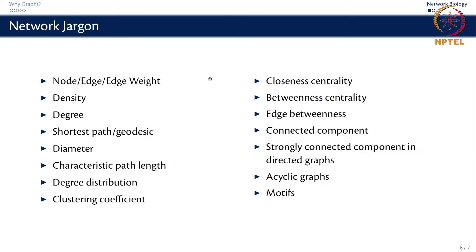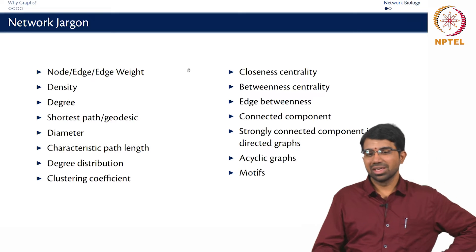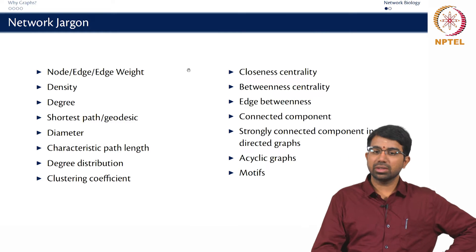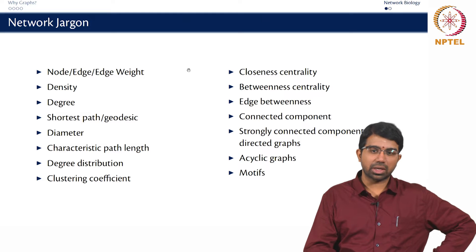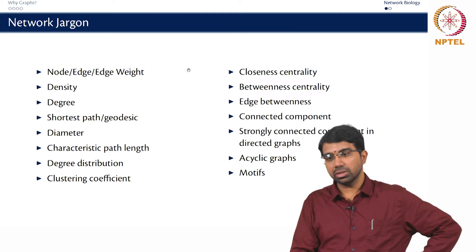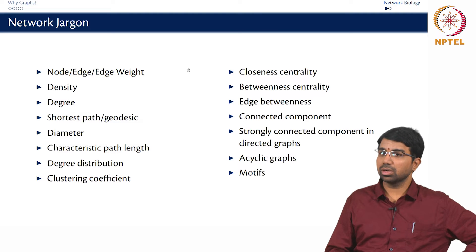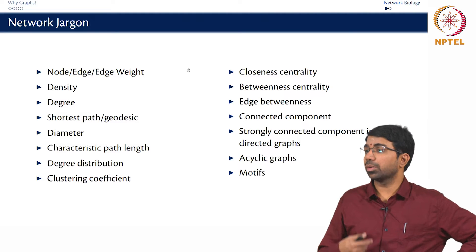Let us look at which parameters correspond to nodes, which correspond to edges, and which correspond to the entire network. Density would be a network property, degree is a node property, average degree is a network property, shortest path is for any pair of nodes, diameter is a network property, characteristic path length is a network property, degree distribution is a network property, and clustering coefficient is a node property but you can also average it across the entire network or across nodes which have a particular degree.